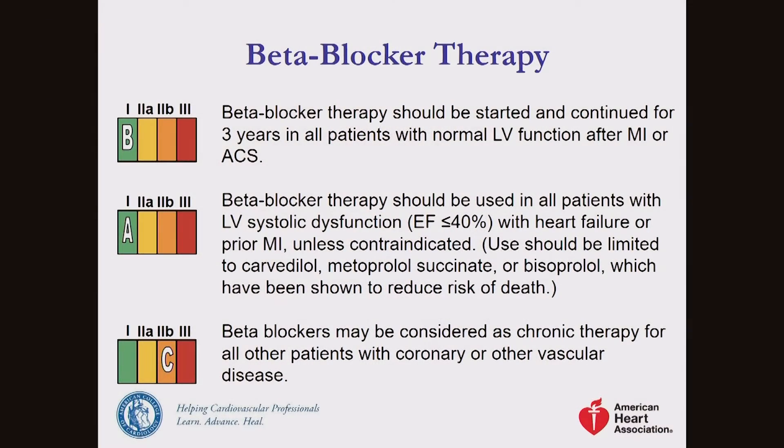Beta blockers are an older medication. Popular ones include metoprolol, atenolol, and carvedilol — brand names like Lopressor, Toprol, Tenormin, and Coreg. If someone's had a heart attack, they should be on a beta blocker for at least a year — the guidelines say up to three years. If someone has a reduced ejection fraction, indicating a weakened heart, they should be on a beta blocker indefinitely. Beta blockers also reduce angina for people who prefer medication over stenting or bypass surgery.